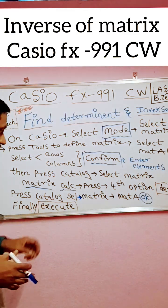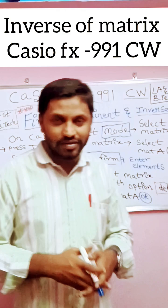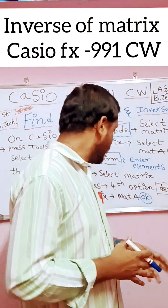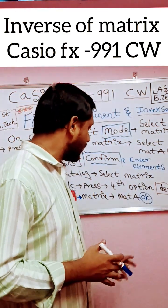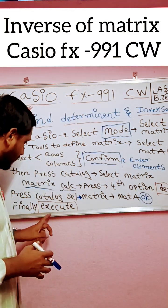So press Catalog, select again matrix. You already entered in matrix A the two by two or three by three elements, you need to select matrix A. So finally execute, you will get determinant of the matrix.